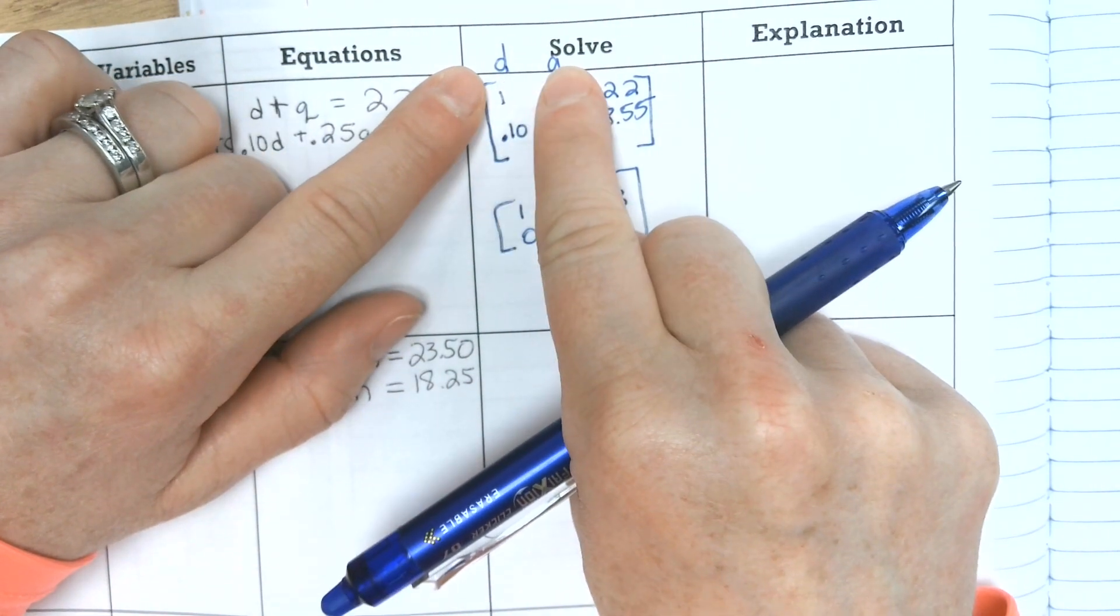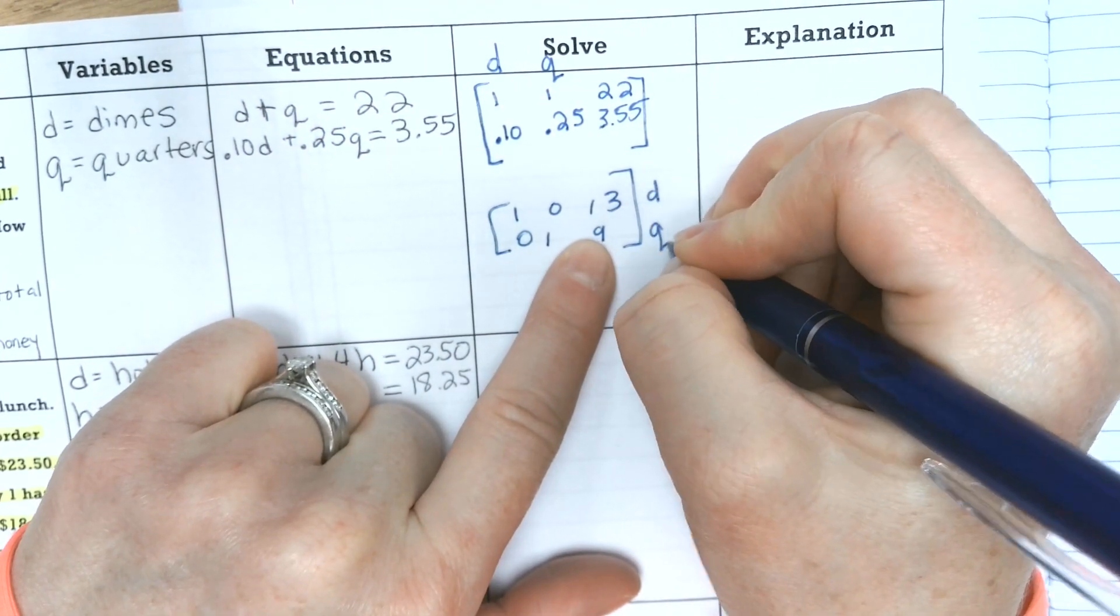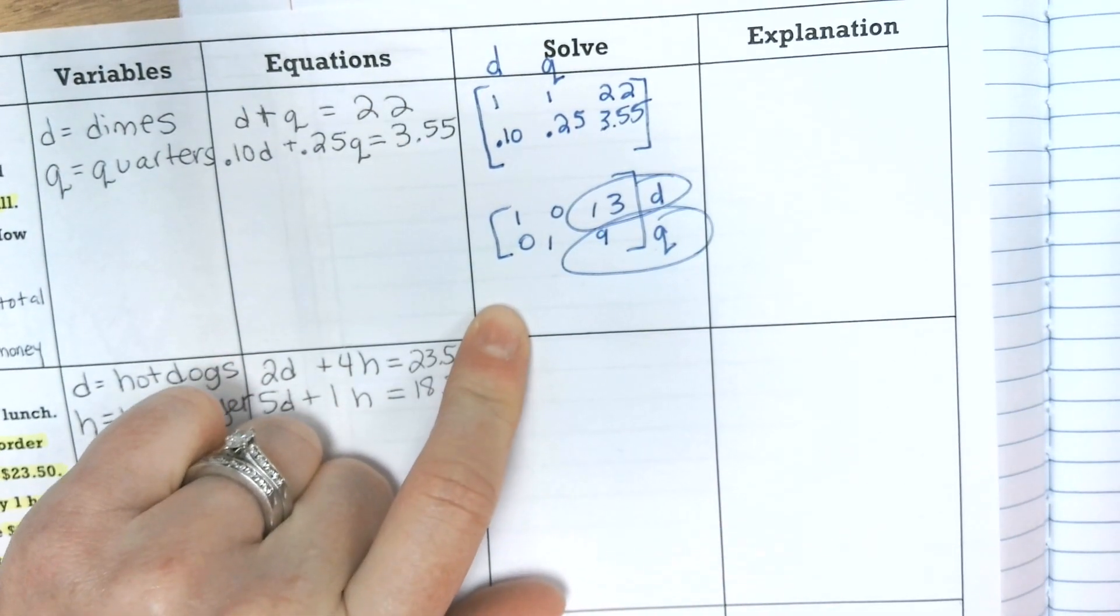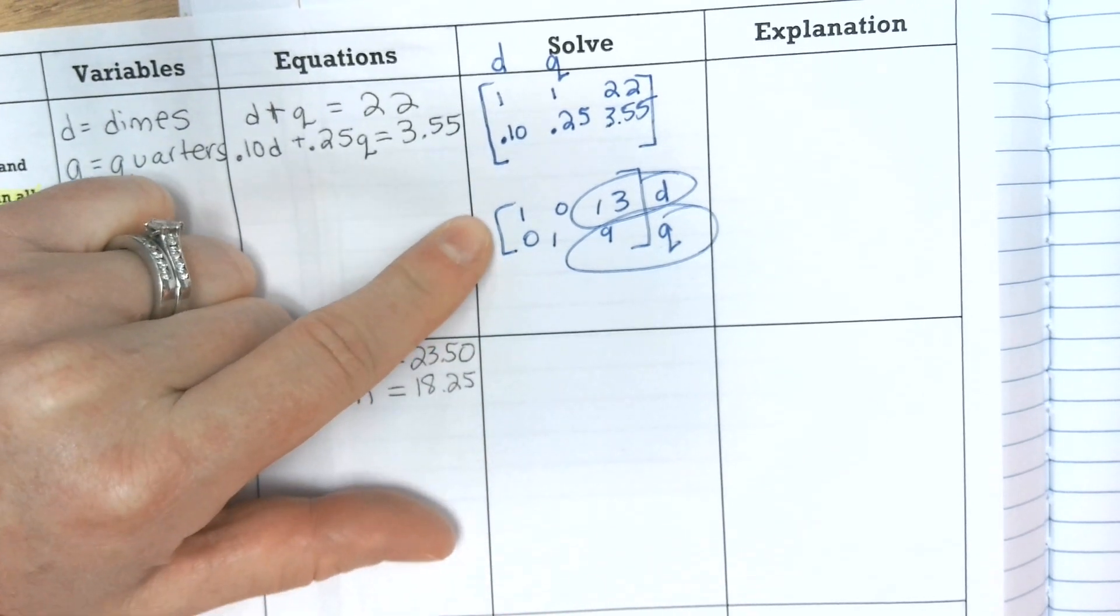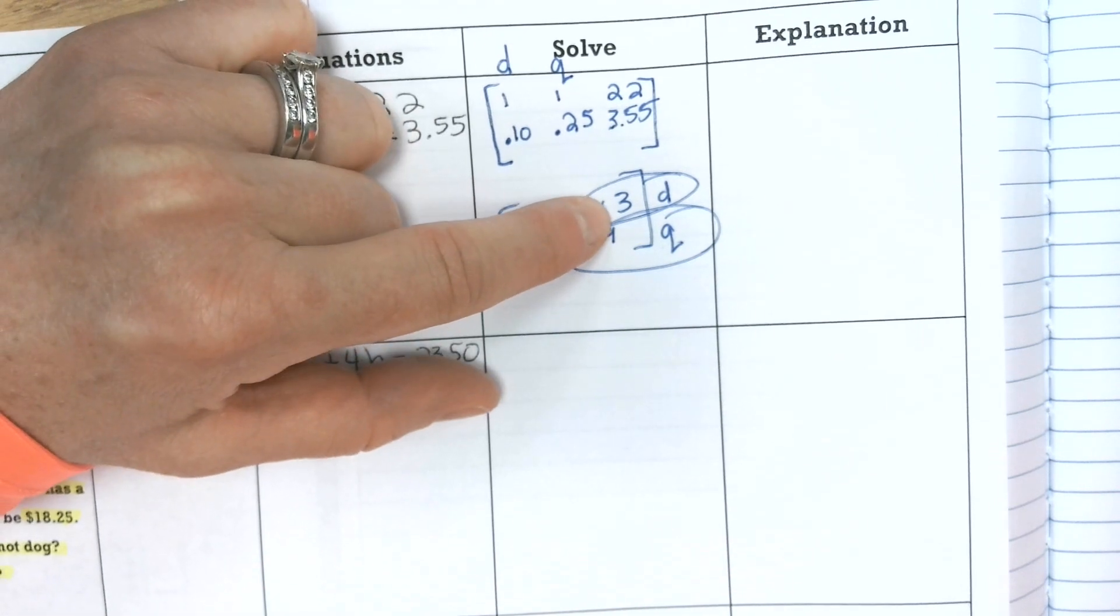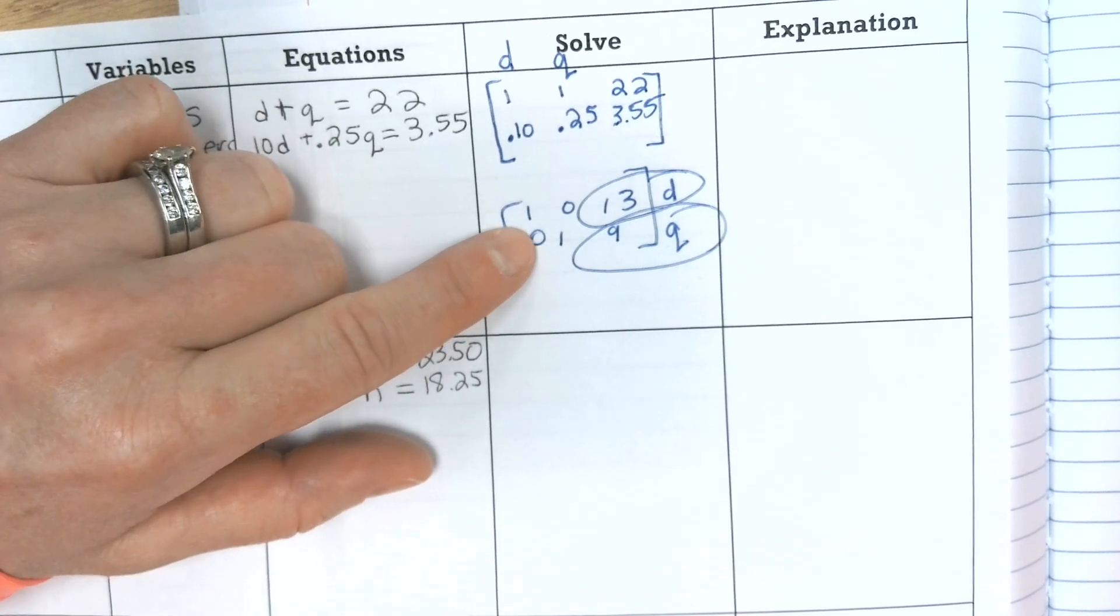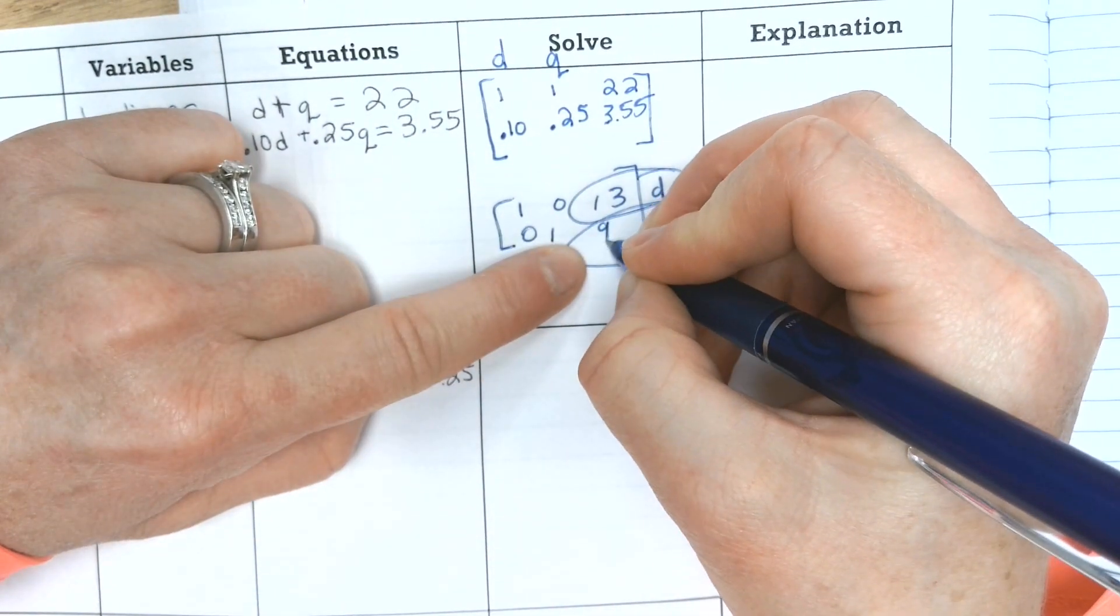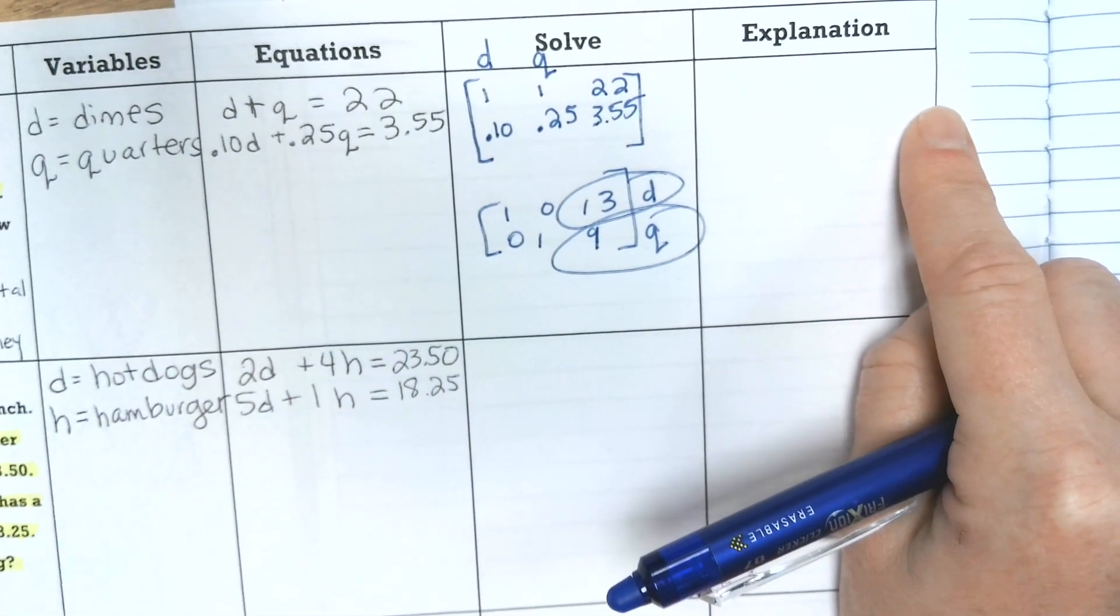So if this is d and this is q, then this is d, this is q. It has to go in the same order. Because this represents an equation. It's like 1d plus 0q equals 13. So really, that just means d equals 13. And then 0d plus 1q equals 9.